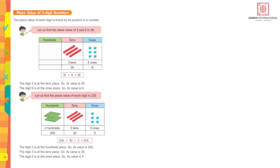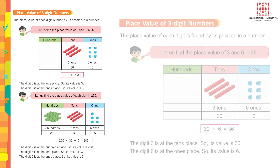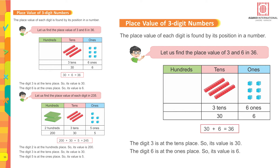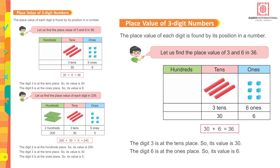Page number 16, topic: place value of three-digit numbers. The place value of each digit is found by its position in a number. Let us find the place value of 3 and 6 in 36. 6 is placed under ones, 3 is placed under tens.